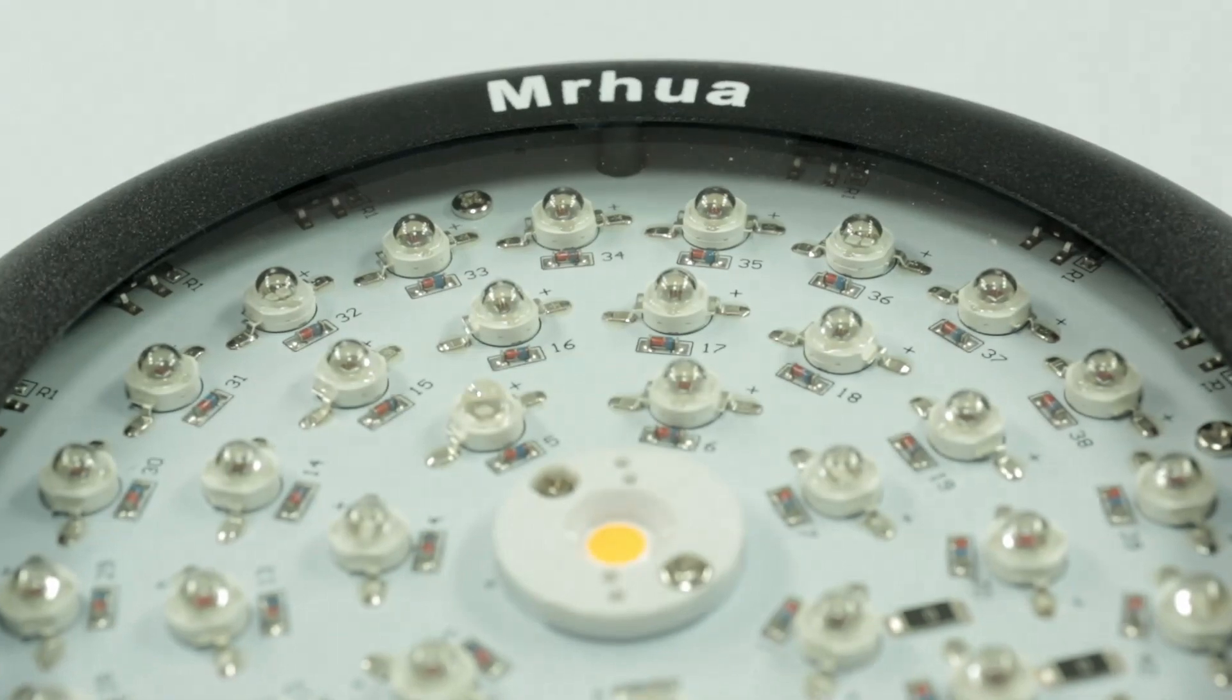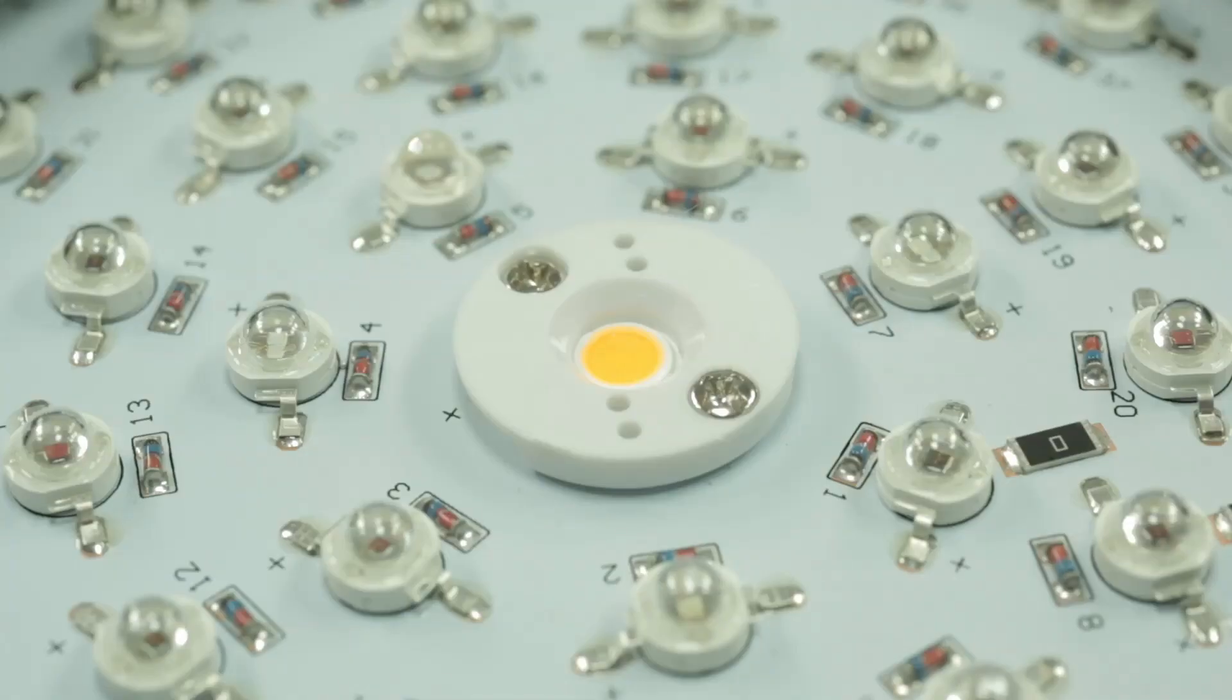As far as the LEDs on this light go, all the smaller ones are 3-watt LEDs, and then the one in the center is actually a 10-watt Cree COB LED. I've seen LED lights that feature just COB lights and other ones that just feature small LEDs, but this is one of the first ones that I've seen so far that combines the two, so I'm really curious to see how it performs with plants.